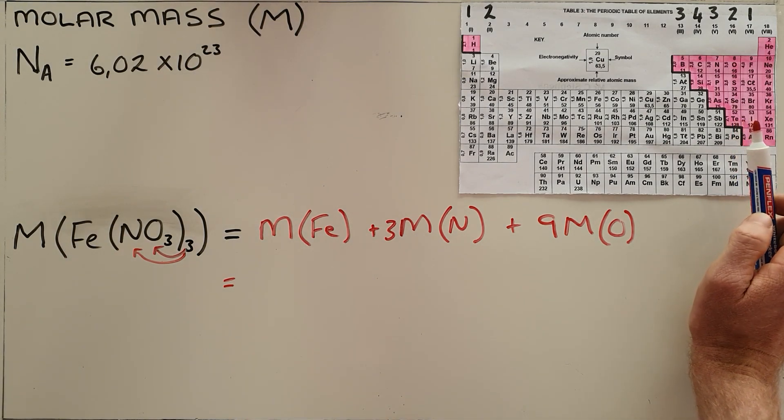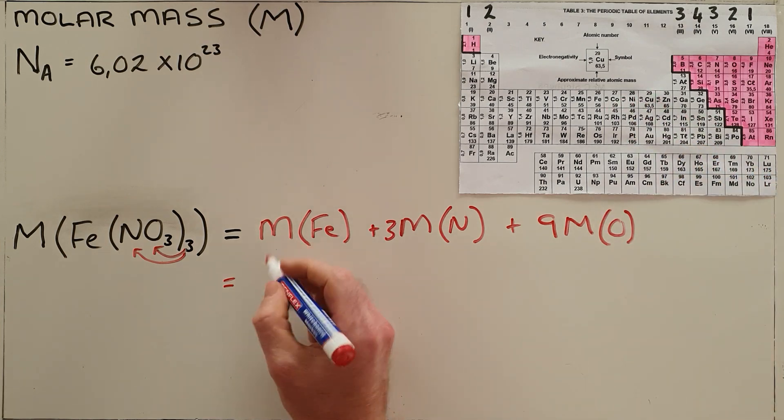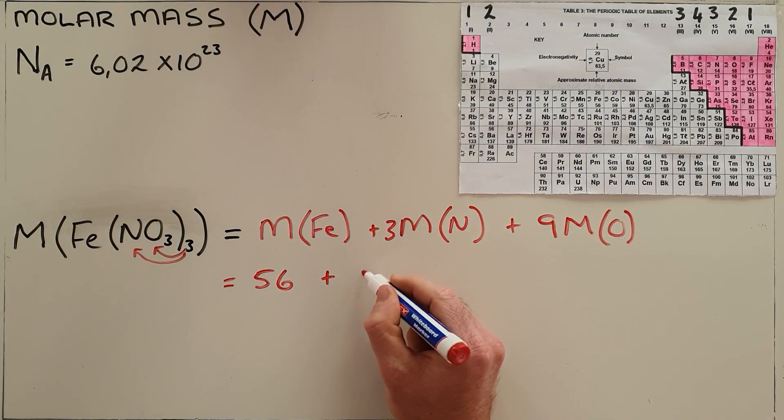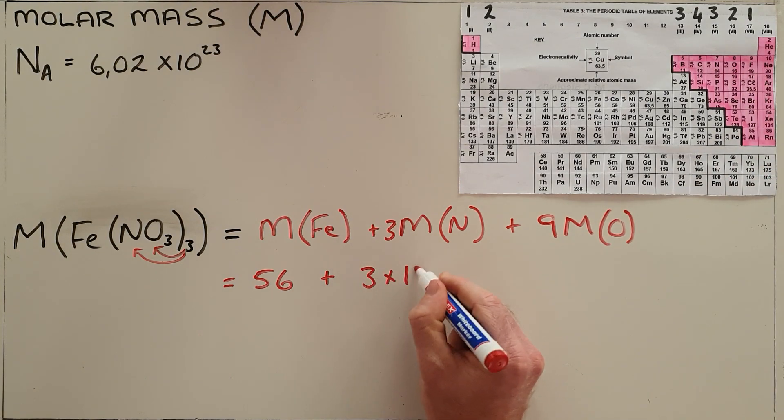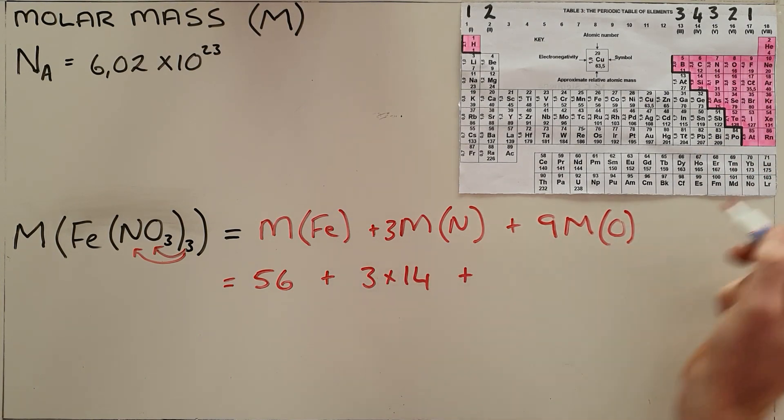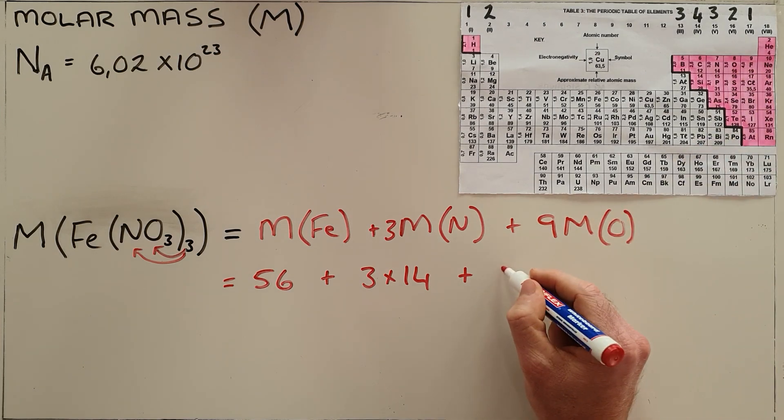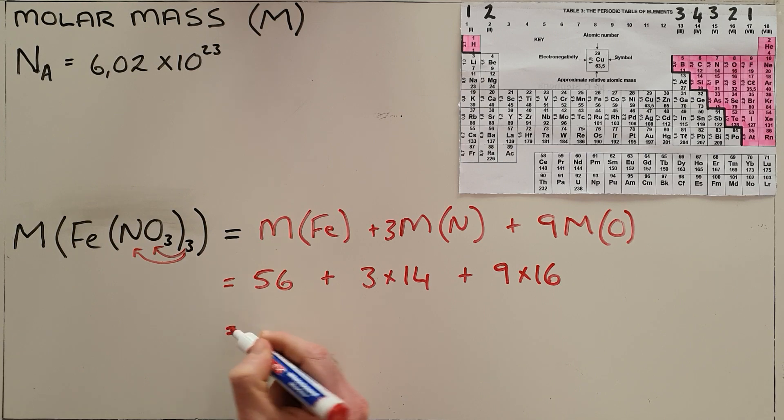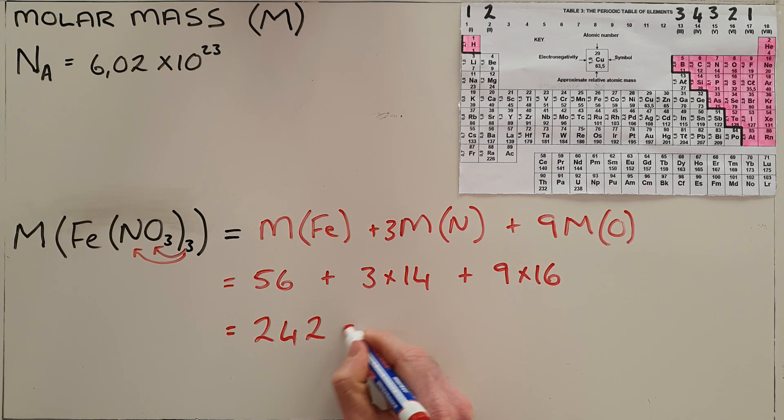What this means is we can read the molar mass from the periodic table. We know that the molar mass for iron is 56, the molar mass for nitrogen is 14, and the molar mass for oxygen is 16, which means that the molar mass for iron nitrate is 242, and that is measured in grams per mole.